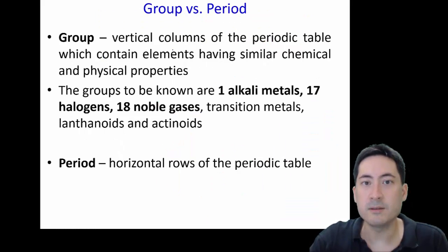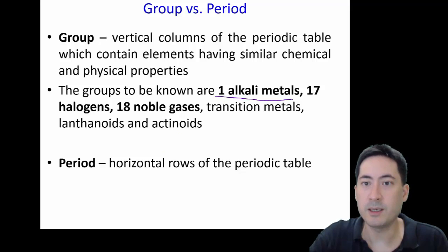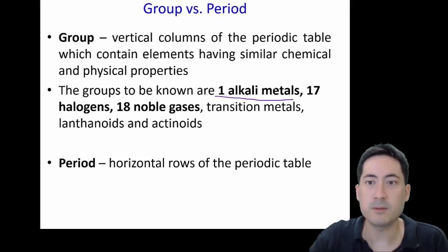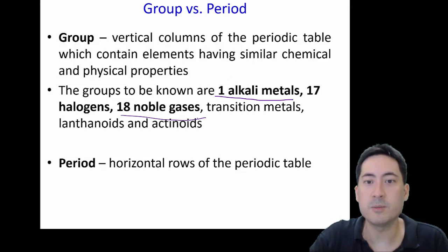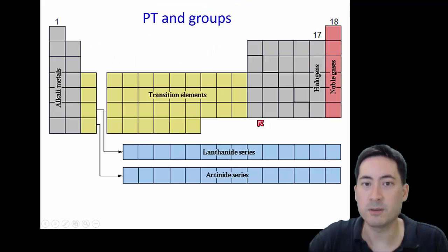Just some basics: groups are going down, and periods are going across. You need to know these three especially — number one, alkali metals, also called group one metals. The 17 are the halogens, the 18 are the noble gases, and then there are the transition metals.